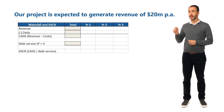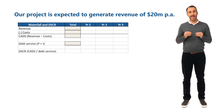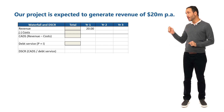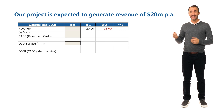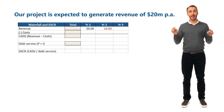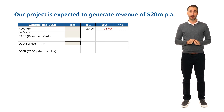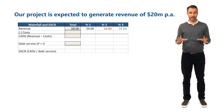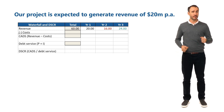Let's consider an example. We have a project expected to generate revenue of $20 million per annum. In year one, we earn that $20 million of revenue exactly as forecast. But in year two, we only get $16 million — that's $4 million less than expected. In year three, we earn $24 million of revenue, recovering the $4 million of lost revenue from year two.